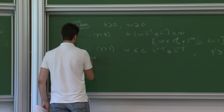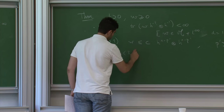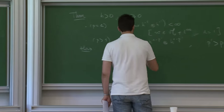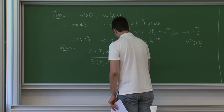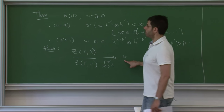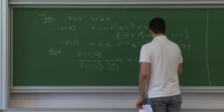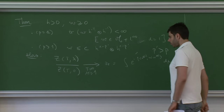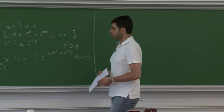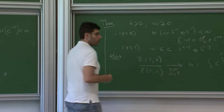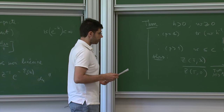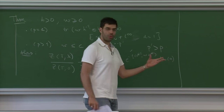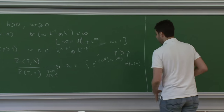La conclusion du théorème : on a convergence de la fonction de partition Z(T,λ) divisée par Z(T,0) quand T → ∞ et λT → 1, vers Z_r qui est le coefficient de normalisation de la mesure μ, c'est-à-dire l'intégrale de exp(−terme non linéaire) dμ_0(u). Cette partie concerne la convergence de l'énergie libre.